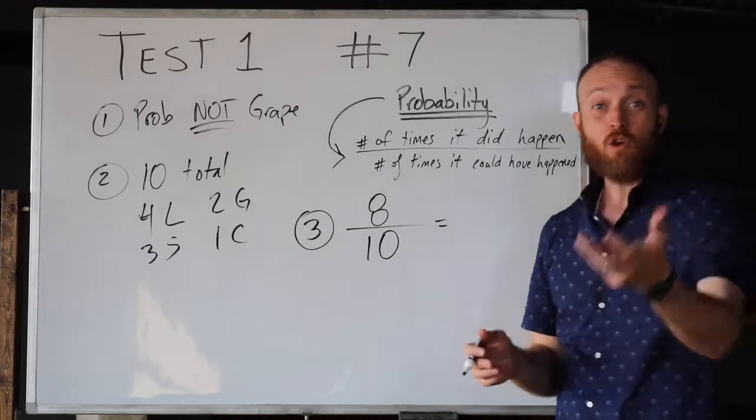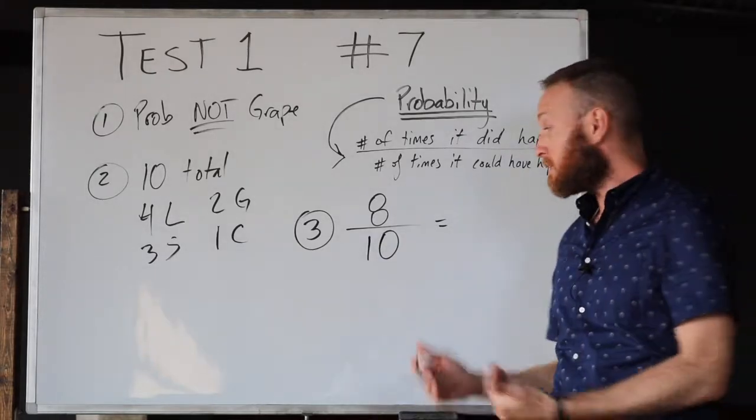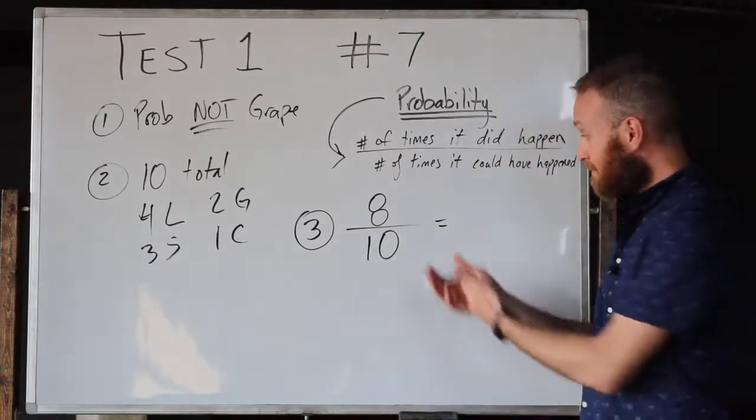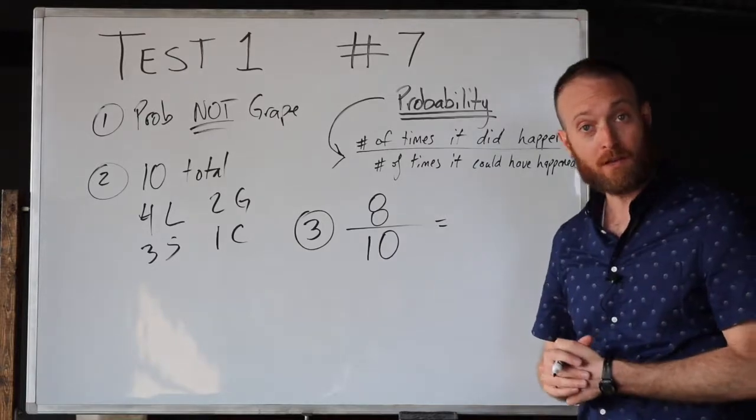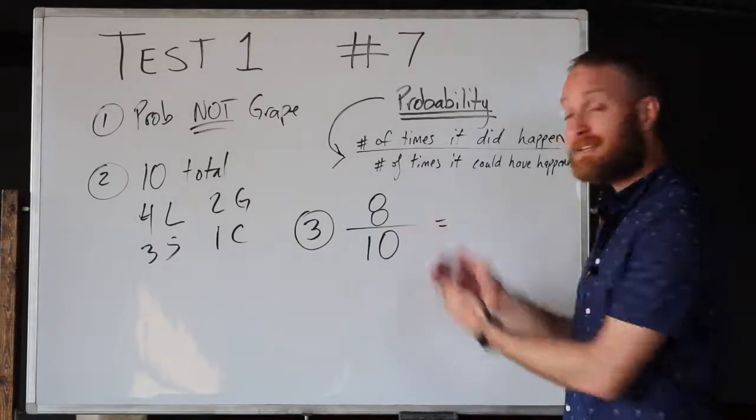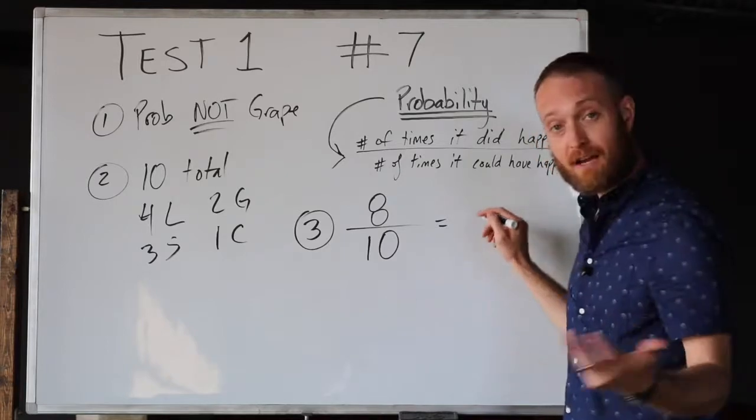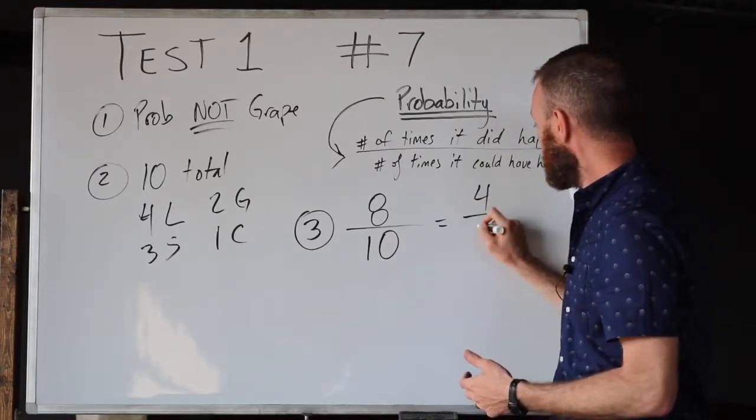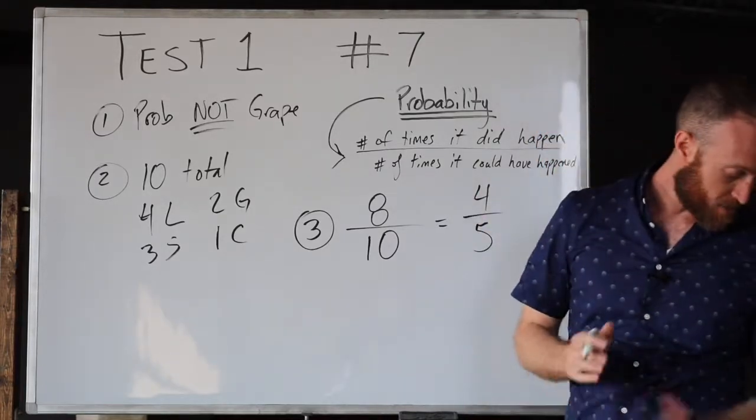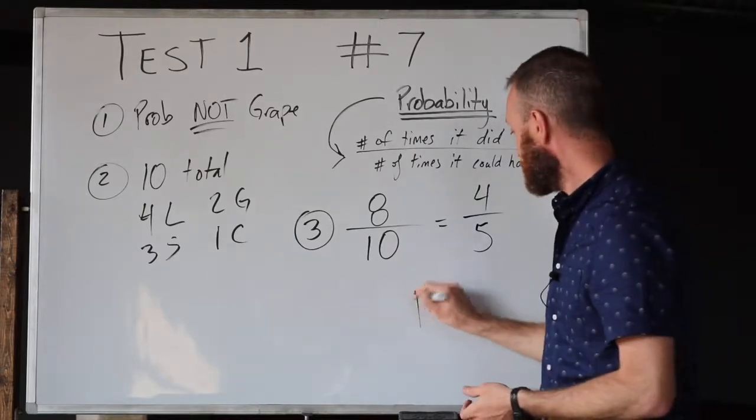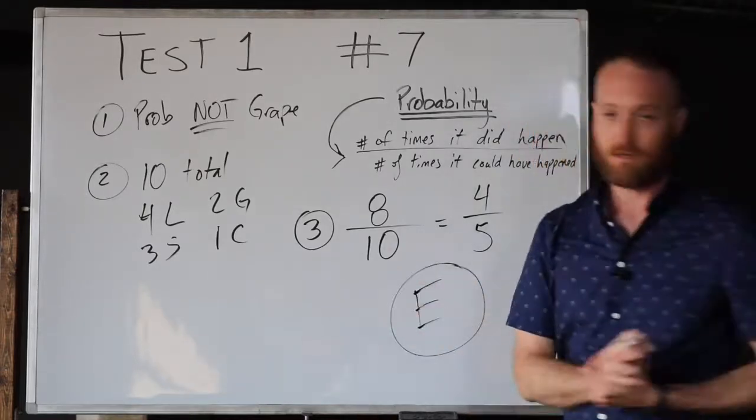So instead of thinking that we did it incorrectly, we have to assume that we understand fractions well enough to reduce our fraction and see what it comes out to be. Eight-tenths reduced - just use your calculator if you need to - is four-fifths. So the answer here to this question is E.